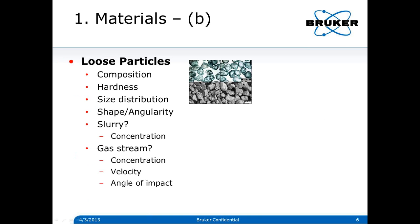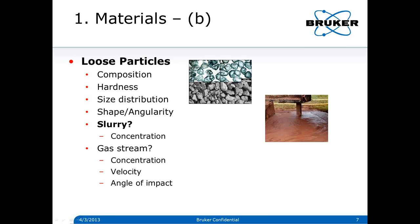The second part of materials, besides rigid or monolithic bodies, is loose particles. We need to consider a number of things with loose particles, including their composition — is it silica, is it alumina? Those have different hardnesses. What is their size distribution? What is their shape and angularity? All of those things affect the wear rate that's going to be measured. If we have a slurry, like drilling mud, we also worry about the concentration in the slurry.